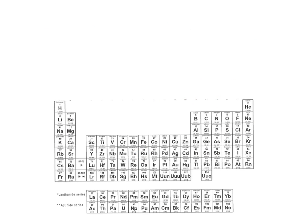I would like you to try a couple on your own, and then I will solve them. Number one: find the valence electrons for phosphorus. Number two: find the valence electrons for iodine. Number three: figure out the valence electrons for calcium. Pause the recording, solve for the valence electrons for those three elements, then press play again and we'll continue with the answers.